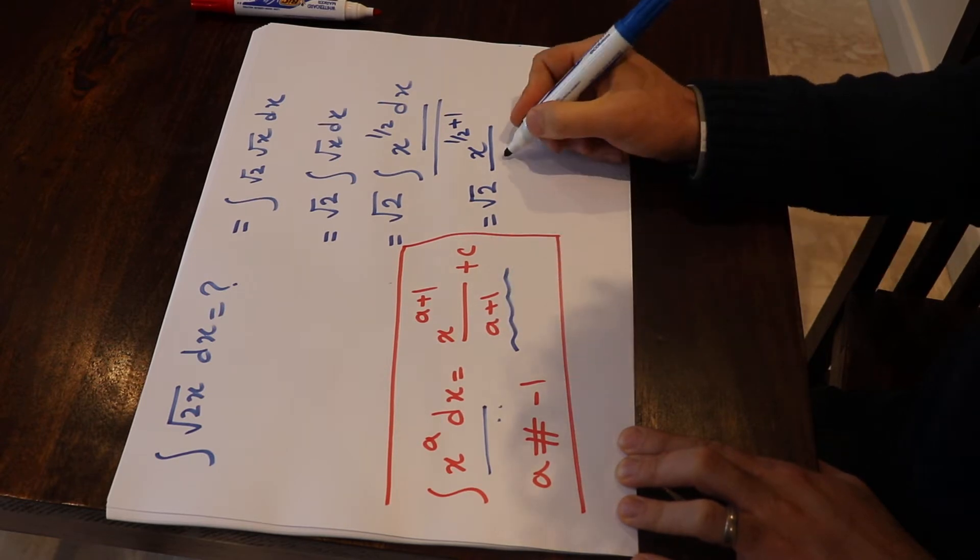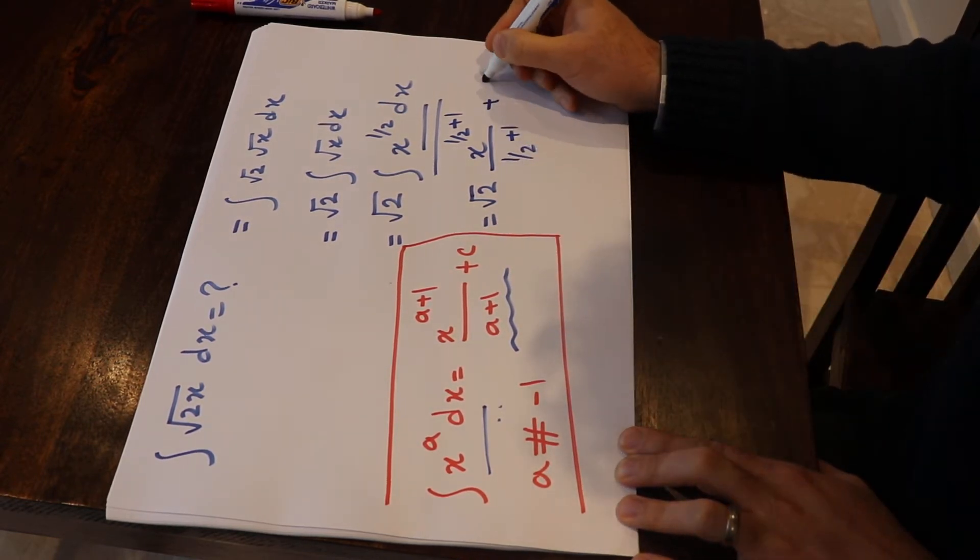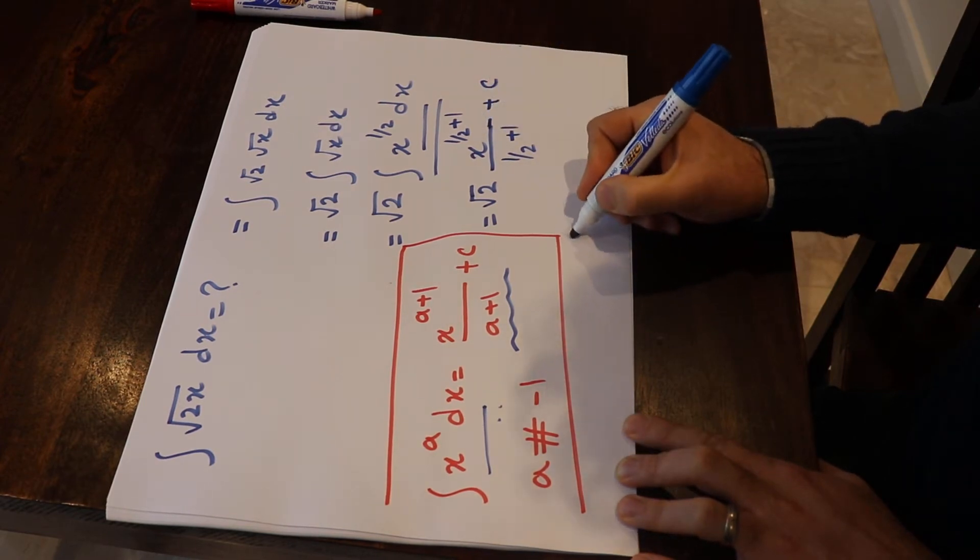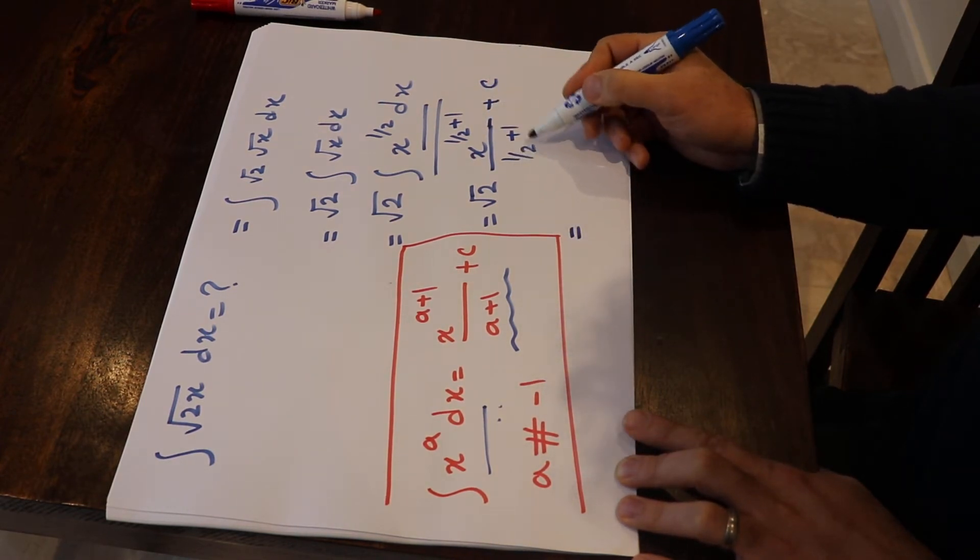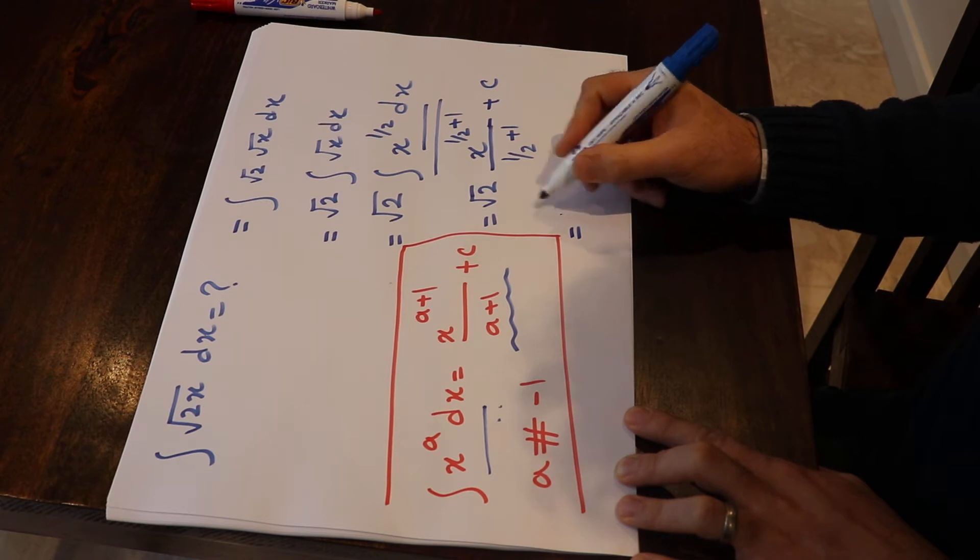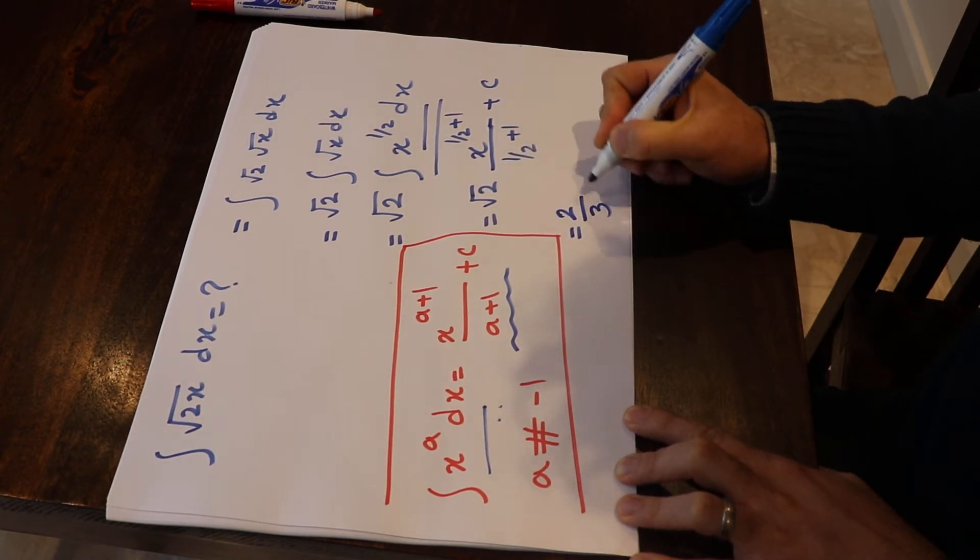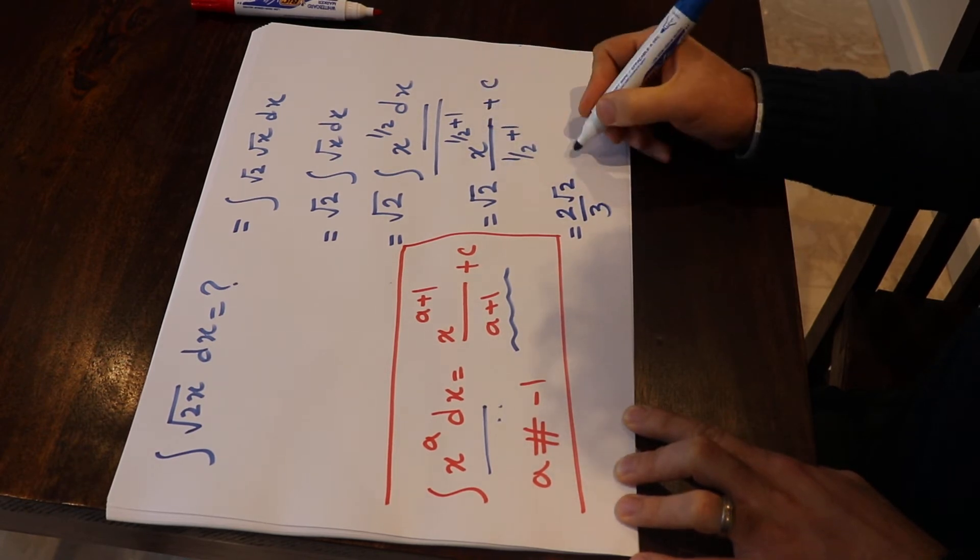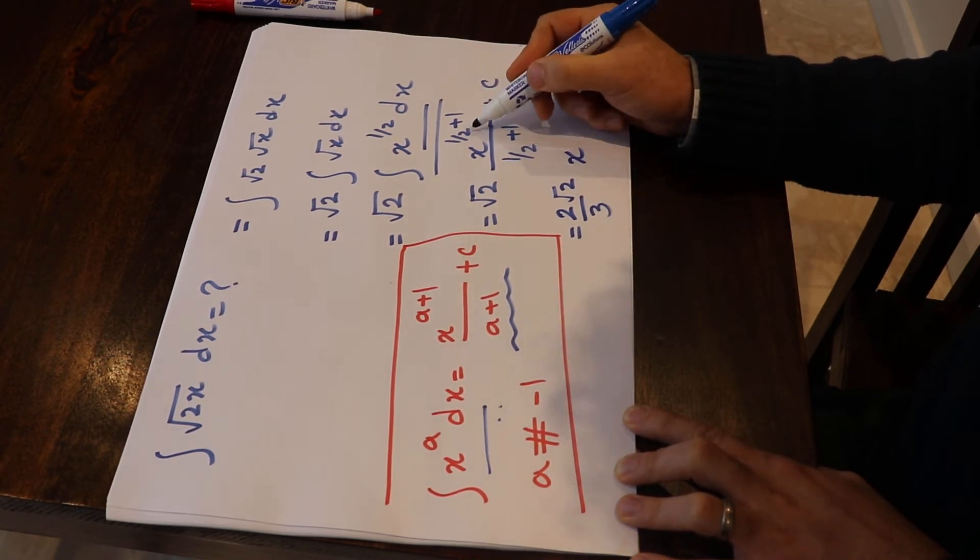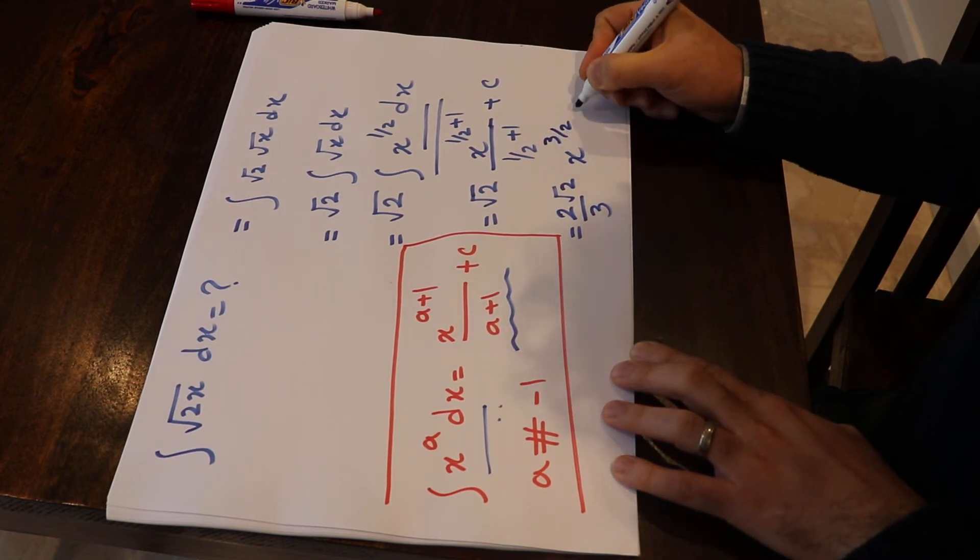divided by (1/2 + 1) plus c. That will be 2/3 times √2, so 2/3 times √2 times x^(3/2) + c.